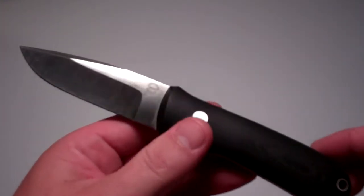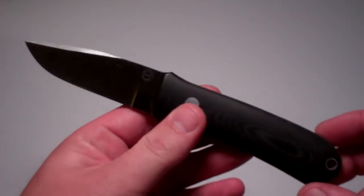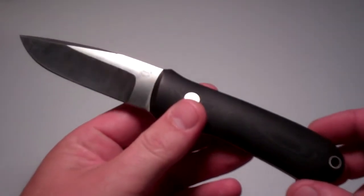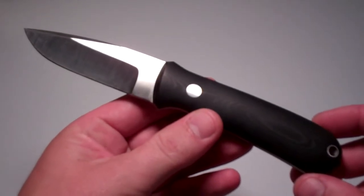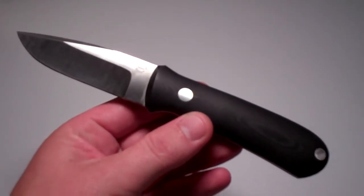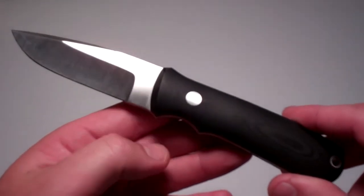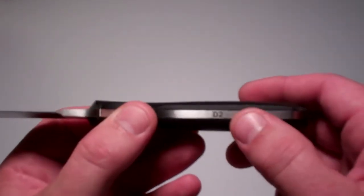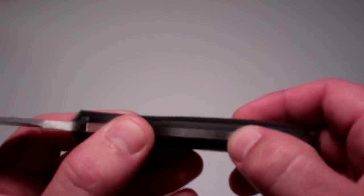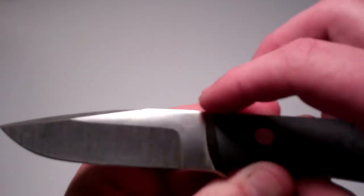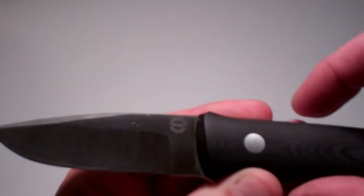My first one, which was kind of a no-brainer for me, I didn't even have to think about it, is my Bob Dozier Agent. It's seven and five-eighths inches overall, with the blade being three and a quarter inches. It's D2 steel, stamped right there, and you have Bob Dozier's stamp right up here.